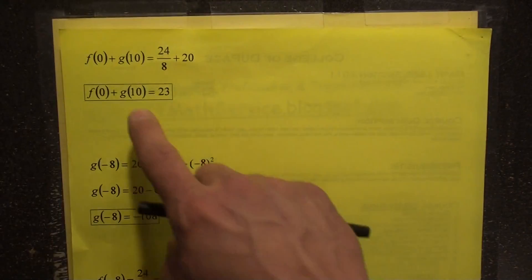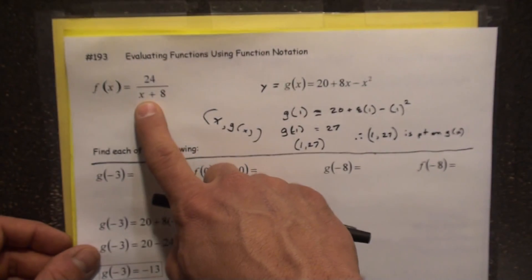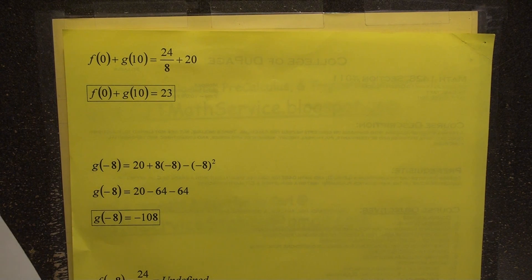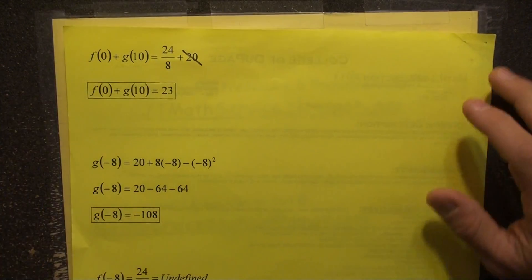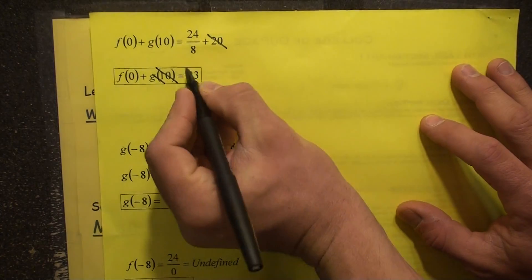So f of 0 would end up being 24 over 8, because if you plug a 0 in here, there you go. So, plus the 20, and how do we get 20? Let's see here. G of 10. Oh, g of 10. That's actually wrong. I think I meant to put g of 0. I think I did it g of 0. Let's just do this right here. There you go.